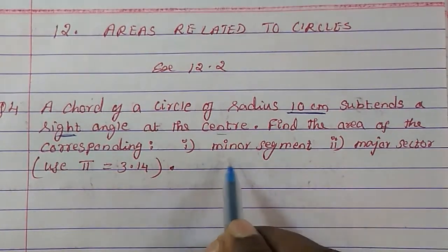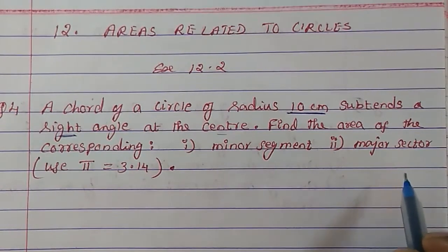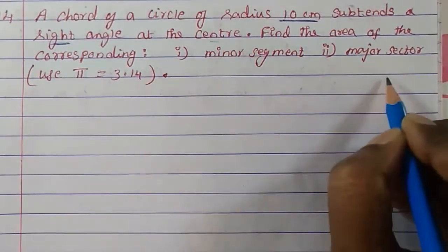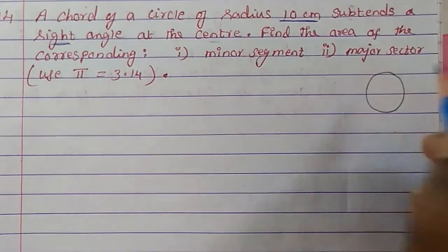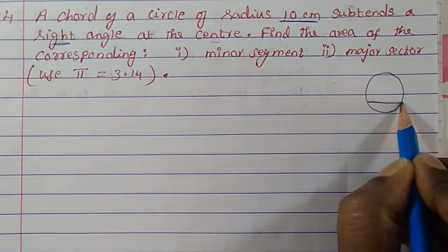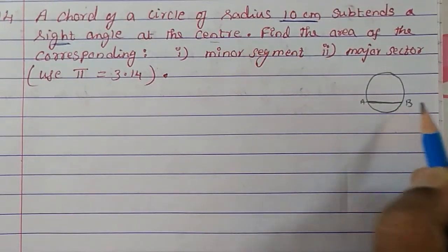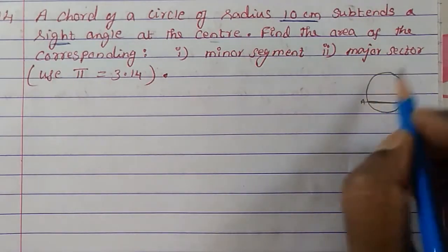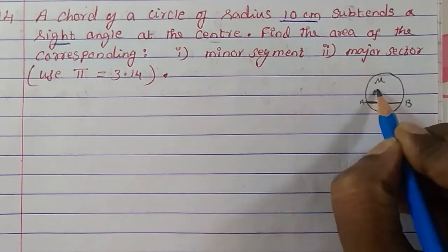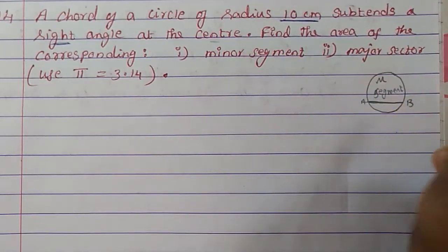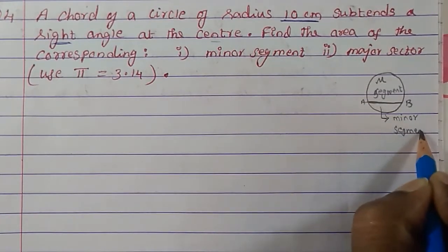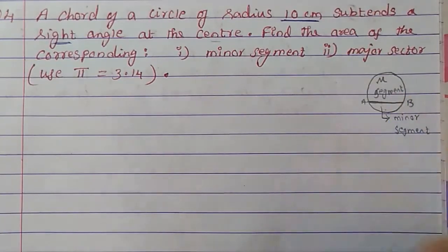First of all, let us understand what is a minor segment and what is a major sector. When there is a circle and there is a chord AB, the larger part is known as the major segment, and the smaller part is called the minor segment.